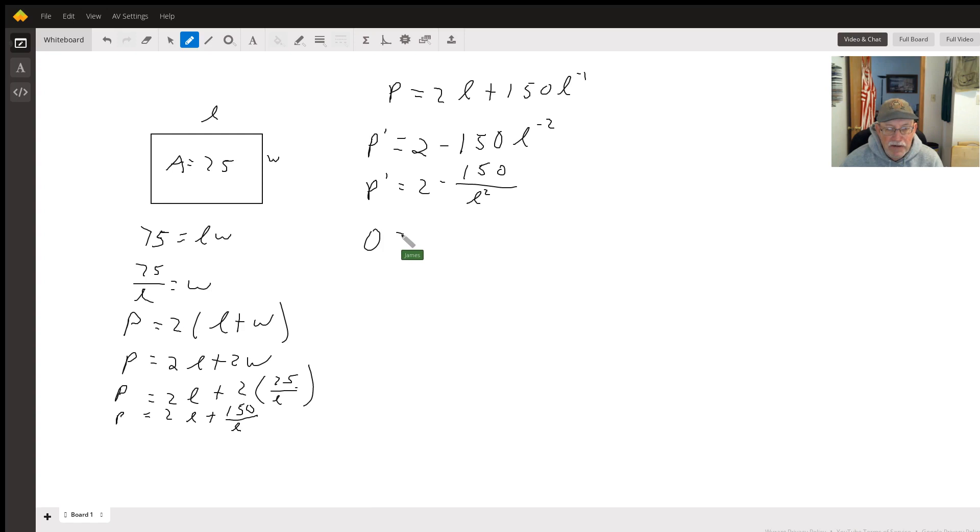So we set our derivative equal to zero. We get 0 equals 2 minus 150 over L squared. I'm going to add the 150 over L squared to both sides just so I don't have to deal with a negative right now. I want to get the L squared out of the denominator, so I'm going to multiply both sides times L squared.